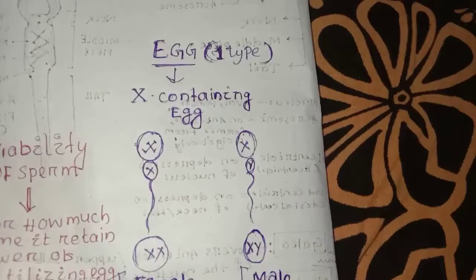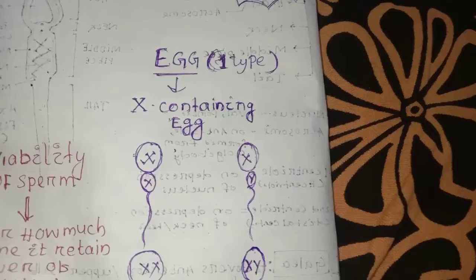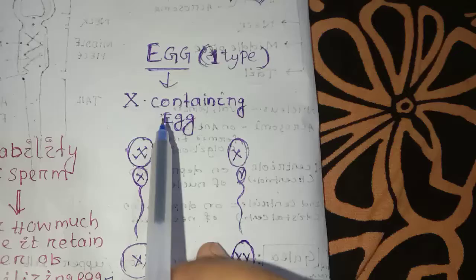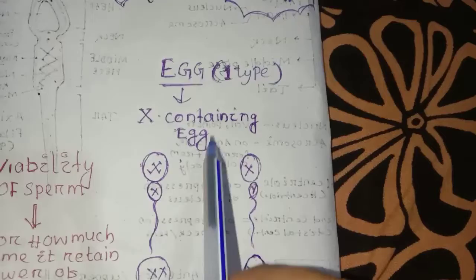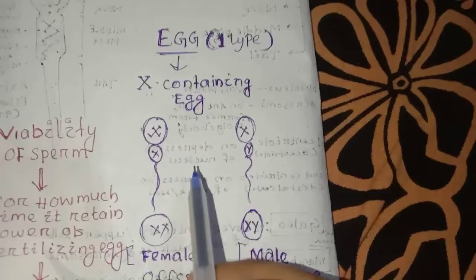This is a homozygous condition where all chromosomes are X. The female genotype is XX, and the male genotype is XY. Female is XX, male is XY — this is the homozygous condition for the female.